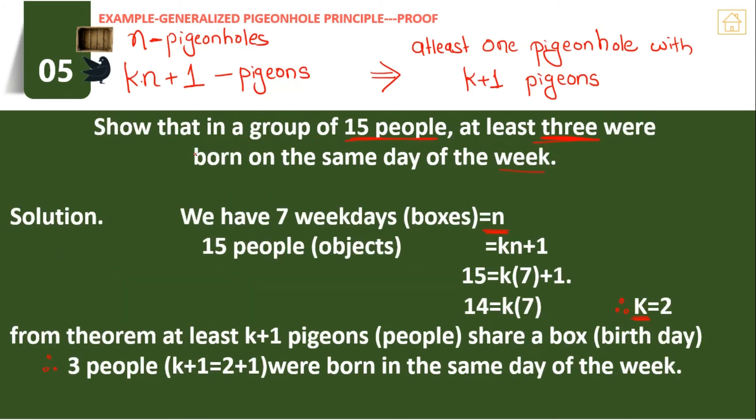For example, show that in a group of 15 people at least 3 were born on the same day of the week. First, we find what are the pigeons and what is the pigeonhole. The pigeons are 15 people. Three were born on the same day of the week—the day of the week is my pigeonhole. Total days of the week are 7, so there are 7 pigeonholes or boxes, so the value of n is 7.